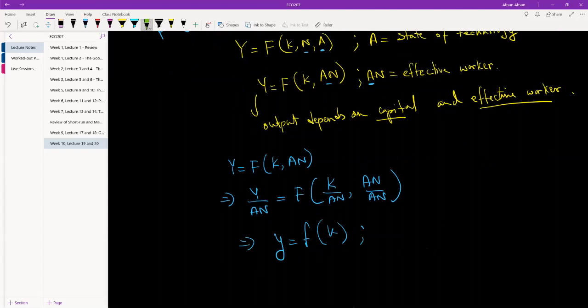Over here we'll just write this down in case some of you are confused. y is output per effective worker and k is capital per effective worker.